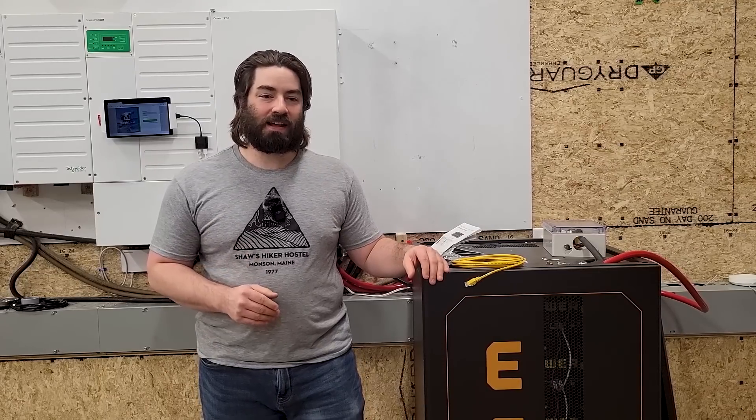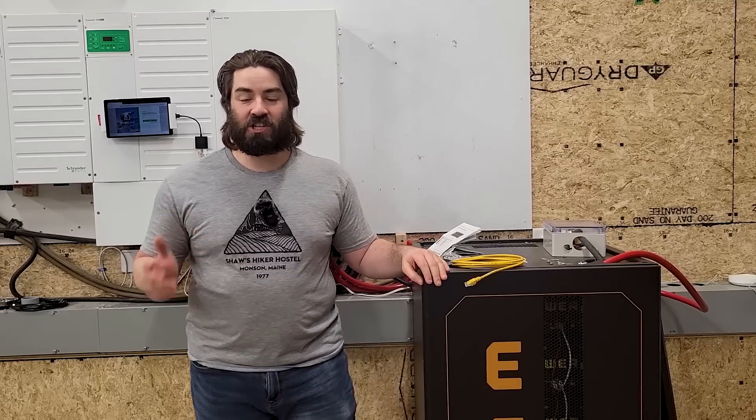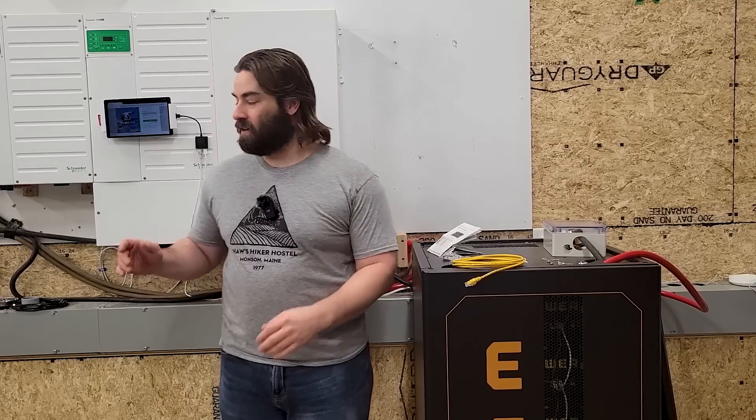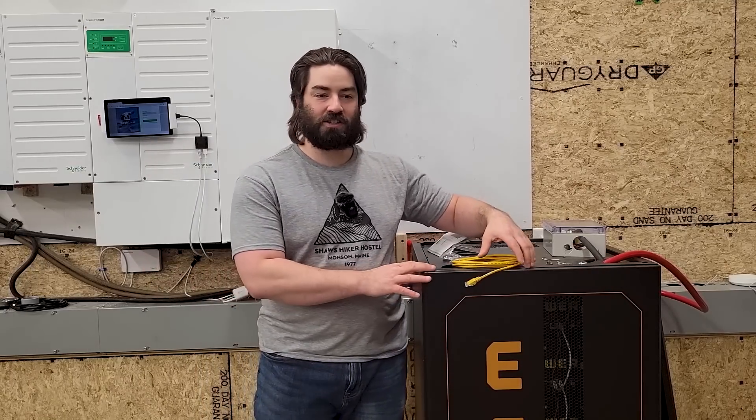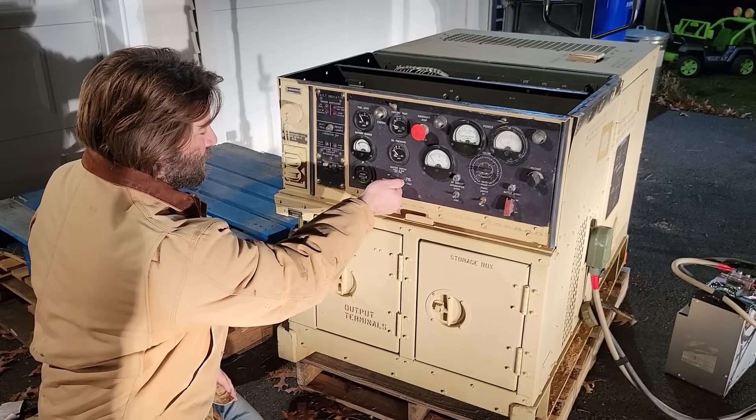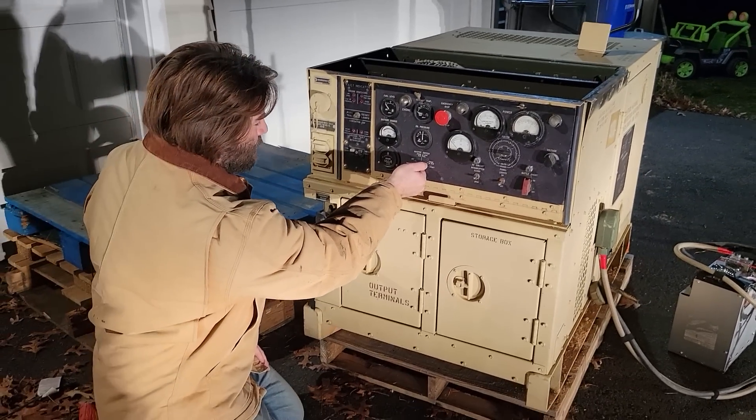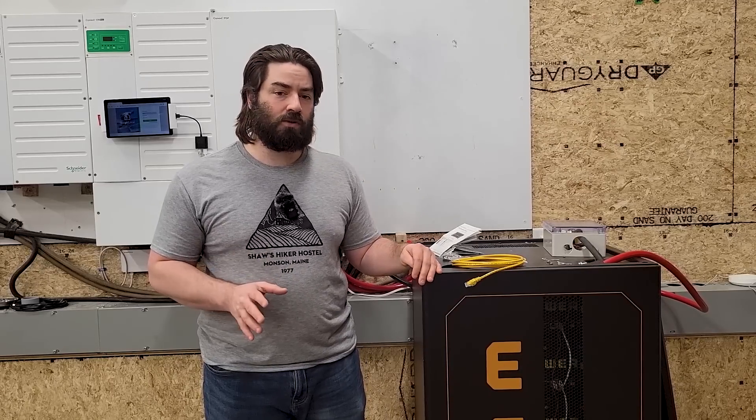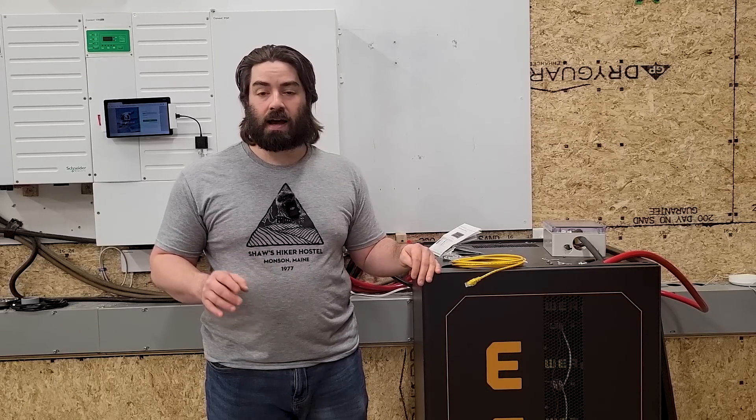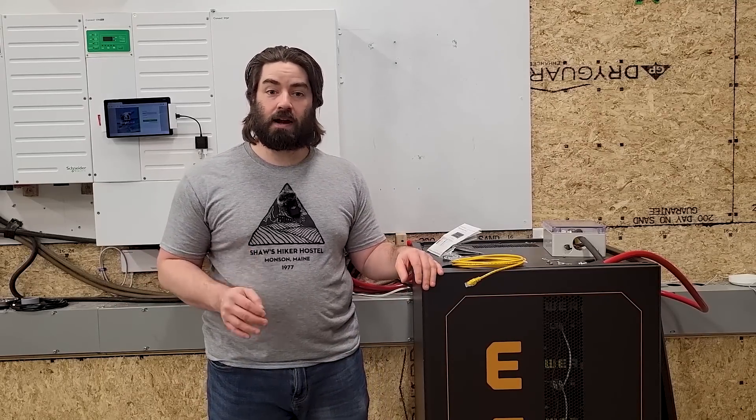Now the number one thing that I would like to set up with this is my generator. I want the Insight Home to automatically turn on my generator when it's necessary to recharge the battery. Currently I've been turning on my generator manually, just when I know that the battery is low in state of charge. But in order to do that more seamlessly, I'd like the Insight Home to tell the generator when to turn on based on state of charge.